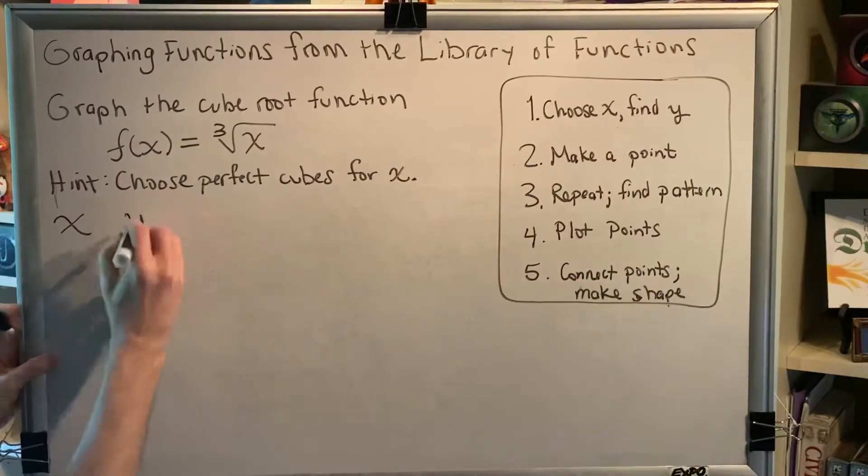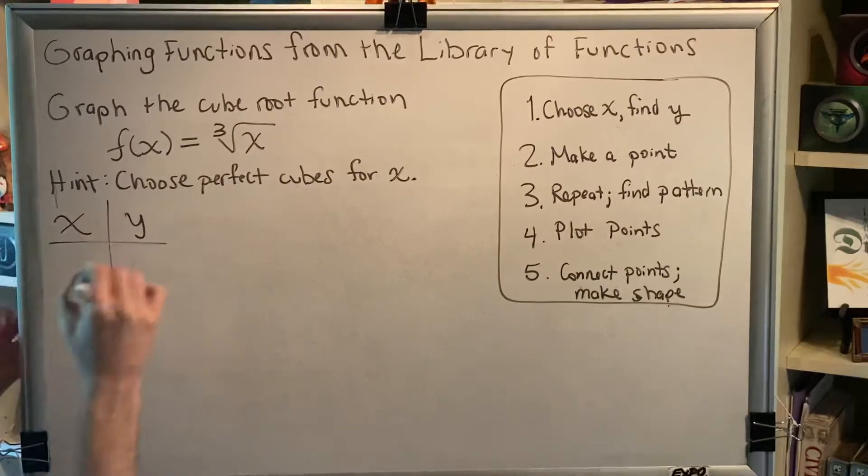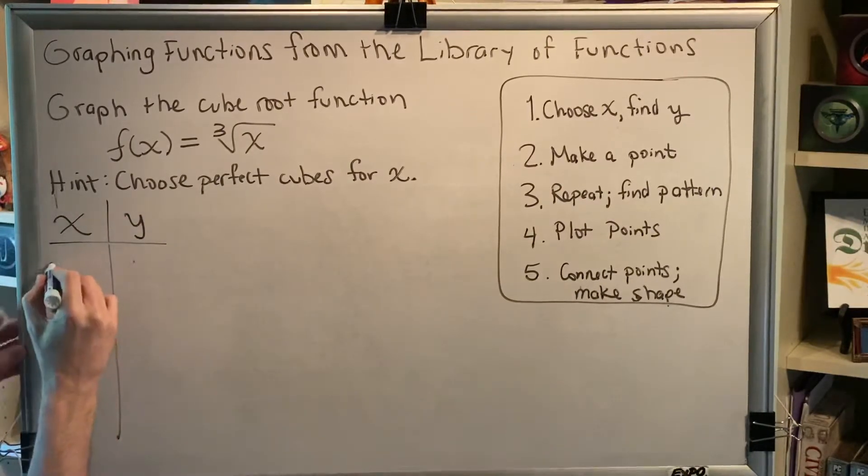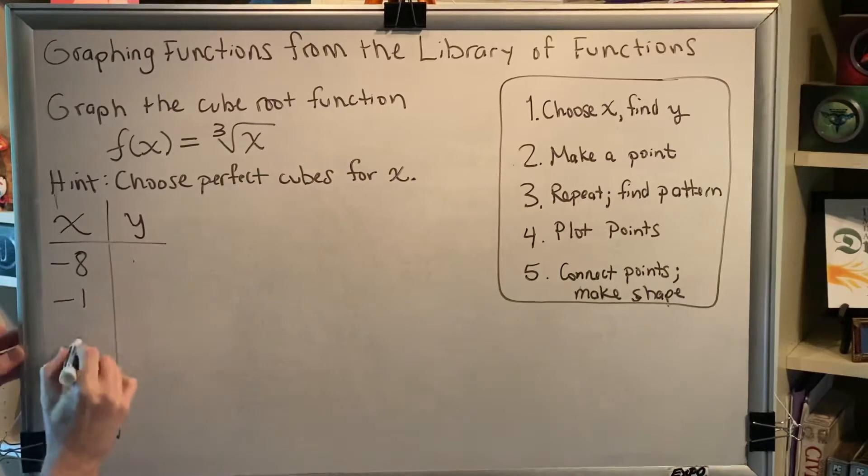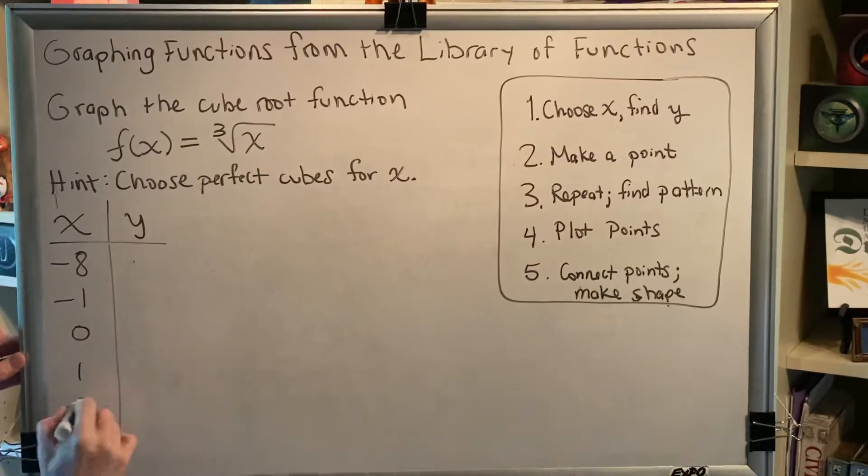Let's make a table here for x's and y's, and let's choose all perfect cubes. So negative 8, negative 1, 0, 1, and 8. Those are all perfect cubes.